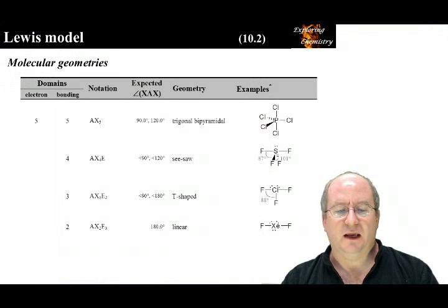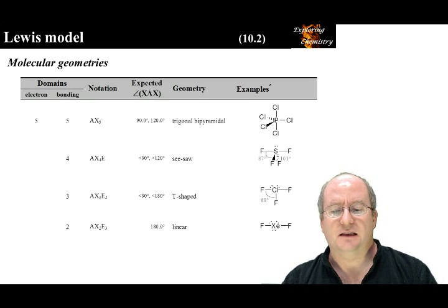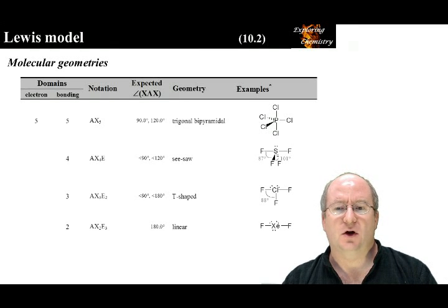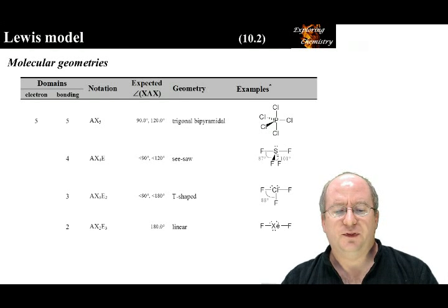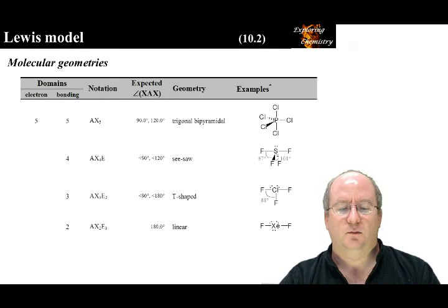With five electron domains, the parent geometry is trigonal bipyramidal. With one non-bonding domain, the geometry is called seesaw because it resembles a childhood seesaw — the angle is less than the parent angle of 120 degrees. With two non-bonding domains, the geometry is called T-shaped, with an angle less than the parent angle of 90 degrees. With three non-bonding domains, all equatorial domains are non-bonding and the geometry is exactly linear, with a bond angle of exactly 180 degrees.